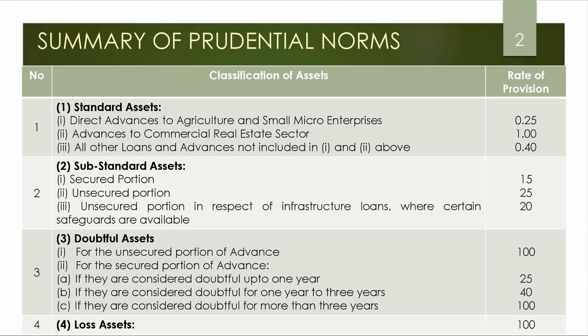Next is Substandard Assets. The Secured Portion is 15%. The Unsecured Portion is 25%. Where there are certain safeguards available, we can minimize it, and we will study 20% on that case.